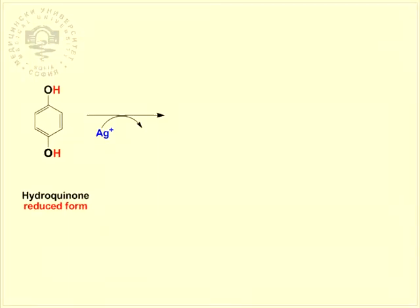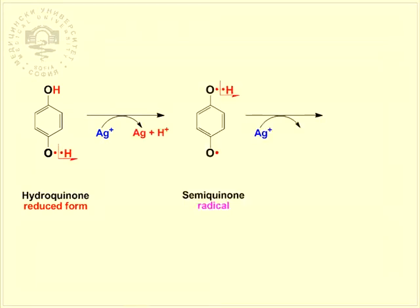The electrons liberated during the oxidation of hydroquinone reduce the silver ions to elemental silver. The oxidation of hydroquinone to quinone passes through a partially reduced semi-quinone.